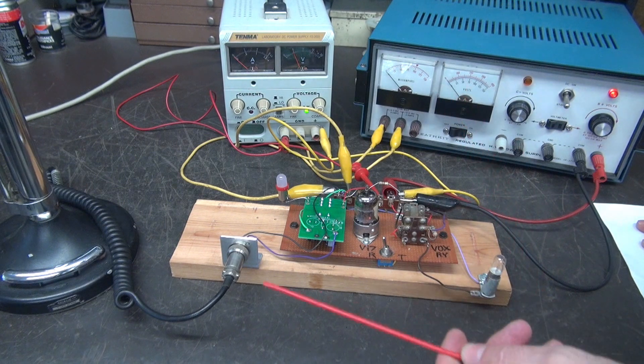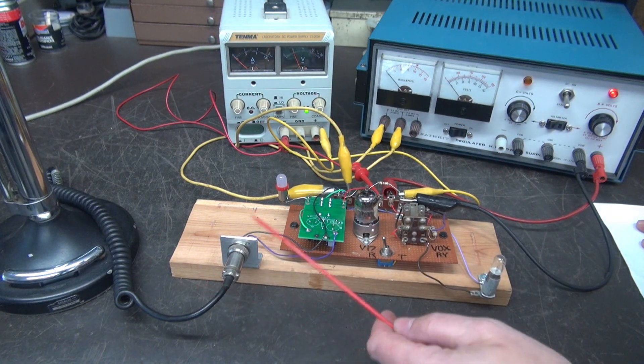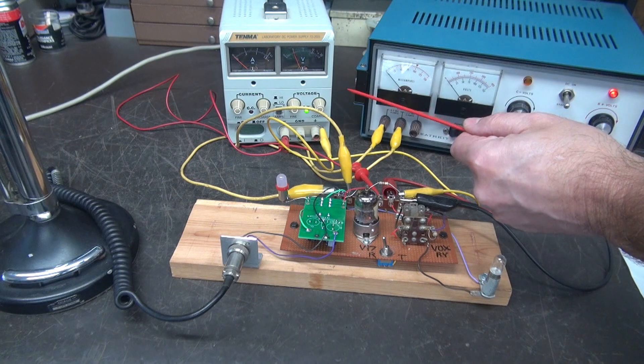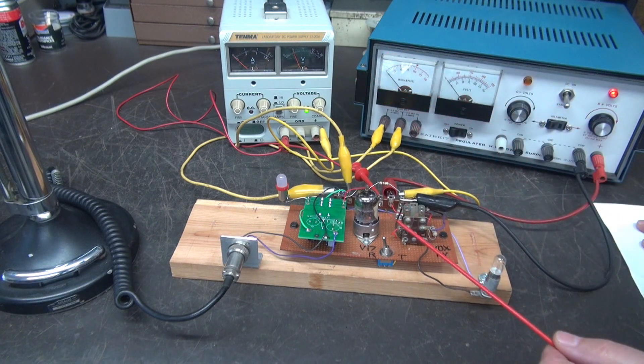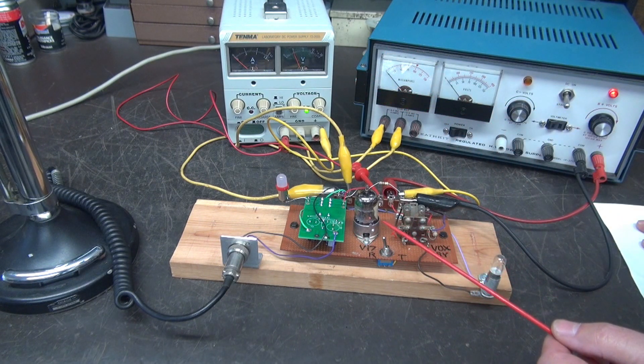All right, once again we have our microphone input going to the K1. This power supply generates the negative voltage for the original HT32 circuitry.